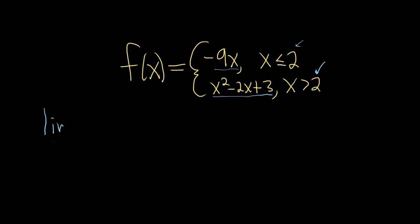If we take the limit from the left as x approaches 2, well, if we're approaching from the left, that means x is smaller than 2. So we're going to use this piece: negative 9x. We can take the limit by plugging in 2. So this is negative 9 times 2, which is negative 18.